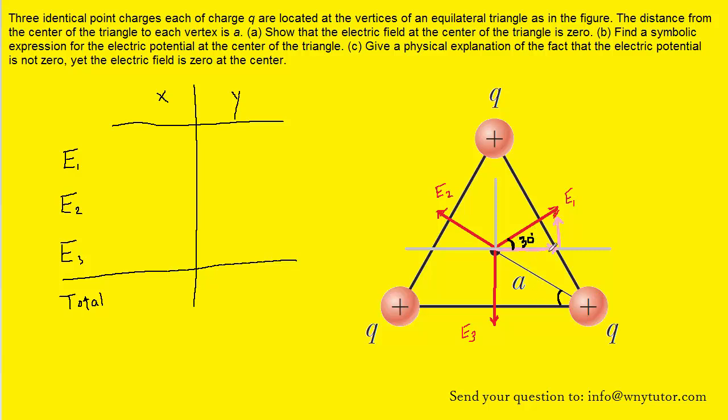So for the x component of E1, notice that it is adjacent to that 30 degree angle, whereas E1 itself is the hypotenuse. And adjacent in hypotenuse will allow us to use the cosine function, therefore, to represent the x component. Furthermore, notice that it's pointing to the right, so it's going to be positive. So we come over to the table, and we can write that the x component of E1 is going to be positive E1 times the cosine of 30 degrees. Remember, we're using cosine because that x component was adjacent to the 30 degree angle.